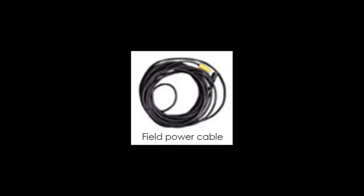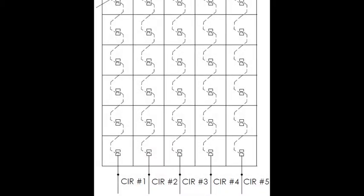Terminate the plug end to the main power cables and then connect main power to the display at locations specified in the drawings. This illustration shows an example of power interconnect cable routing within a display, as well as field power cables connected to main power. Reference contract specific power drawings for details specific to your installation.